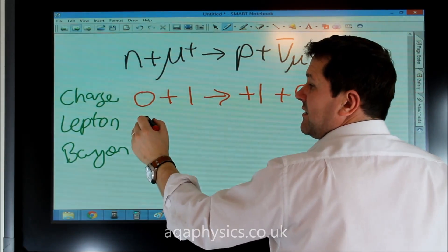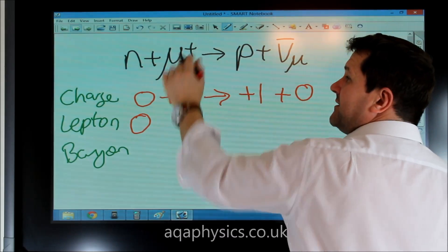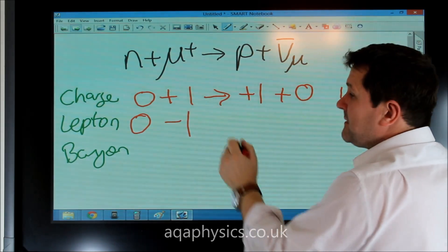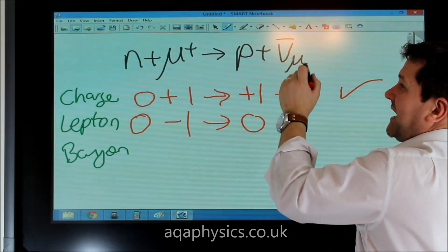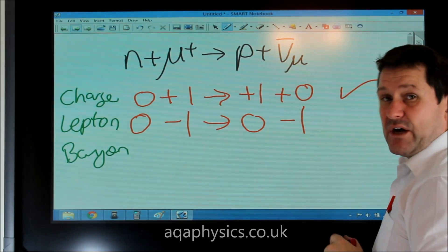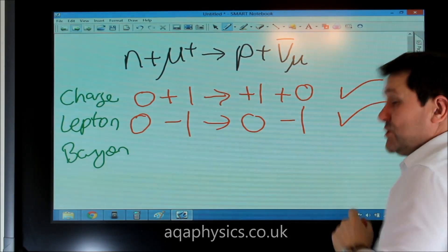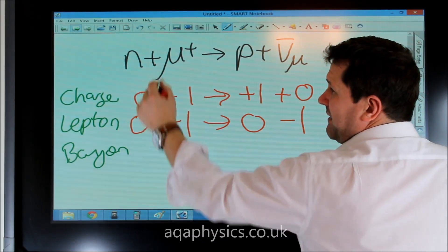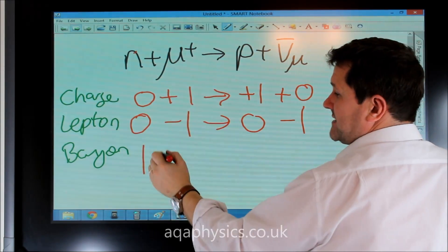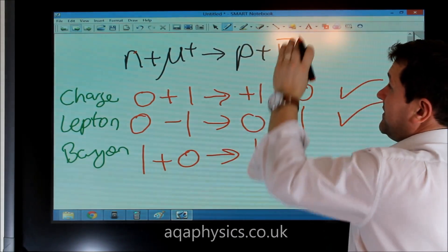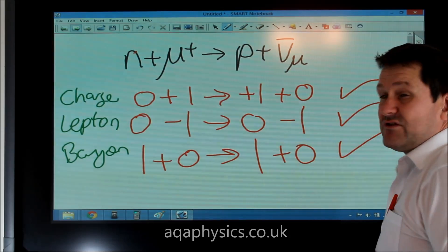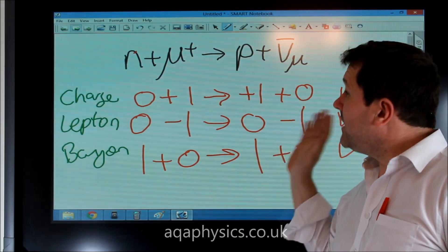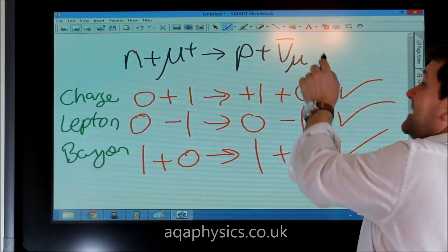For lepton number: the neutron is not a lepton. The anti-muon is an anti-lepton, so its lepton number is minus one. The proton is not a lepton, but the anti-muon neutrino is an anti-lepton, therefore minus one on each side — it balances. For baryon number: the neutron is a baryon, the proton is a baryon, and neither the anti-muon nor the anti-muon neutrino are baryons. So baryon number also balances, and this interaction can also occur.